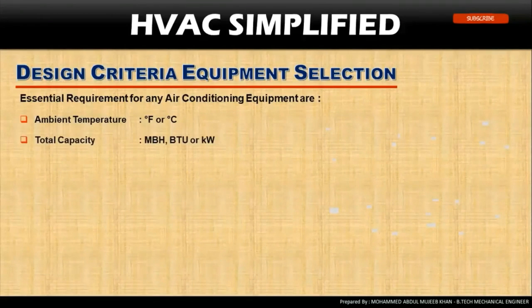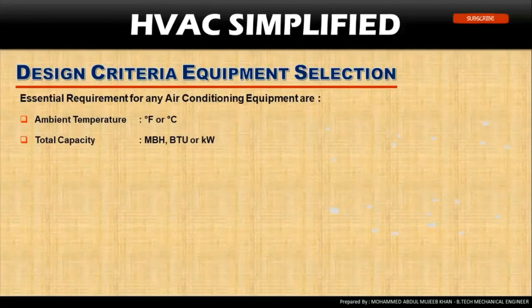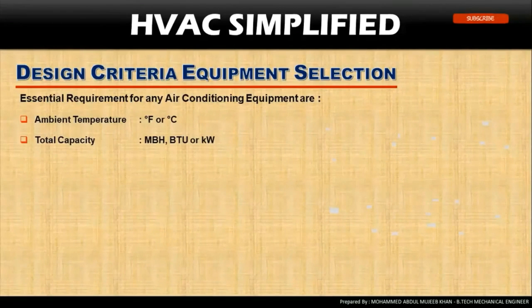The next important parameter is total capacity. The unit for total capacity will be MBH, BTU, or kilowatts. It can also be measured in tonnage — the tonnage of requirement for any HVAC equipment.